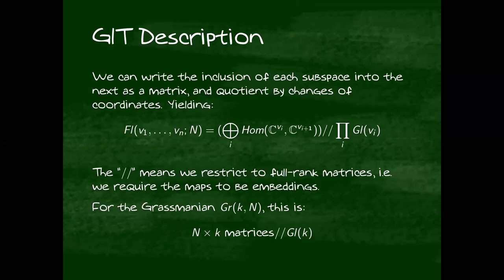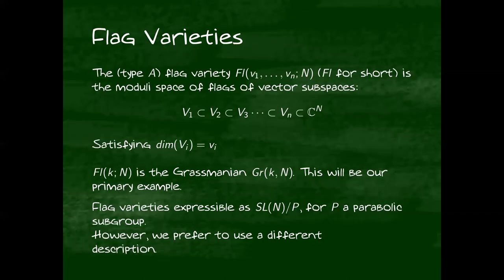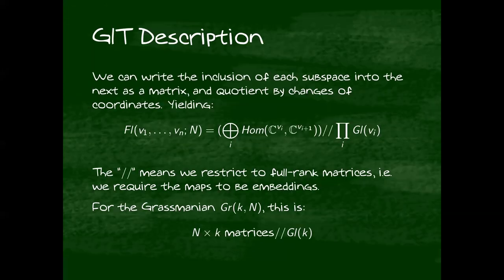Rather, we'll think of these as GIT quotients of vector spaces by some reductive groups. In this case, for flags, it will be the sum space of matrices, quotiented by some product of GL(N)s. The idea here is, imagine if I go back to these, writing, expressing each of these inclusions of subspaces as a matrix, and then quotienting out by how many ways you can change coordinates. This is a GIT quotient, which is why there are two slashes here. And what that means is we first throw out some unstable locus, and then we take the quotient. In this case, the unstable locus is maps that are not injective, which makes sense because we don't have an inclusion of subspaces if the corresponding matrix defines a map that's not injective.